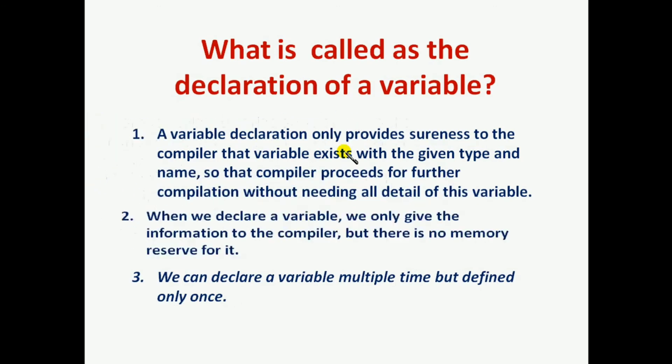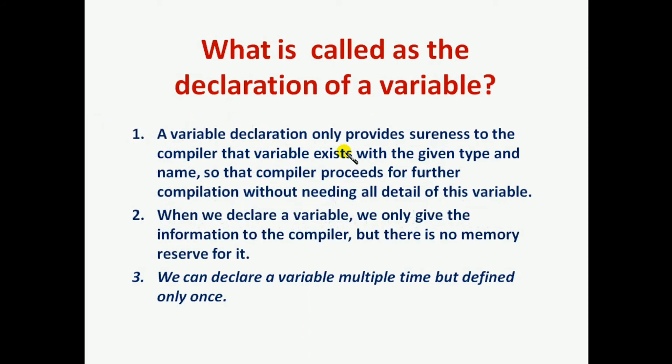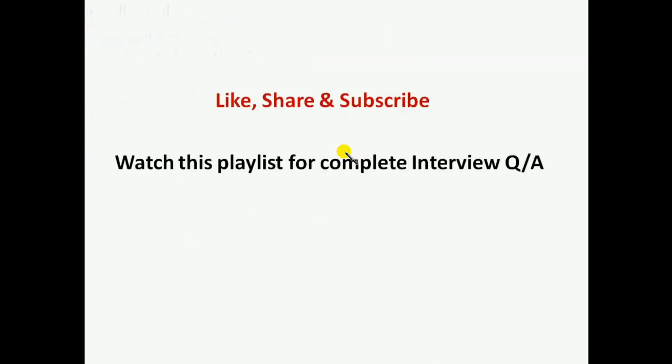When we declare a variable, we only give information to the compiler, but there is no memory reserved for it. We can declare a variable multiple times but define it only once.